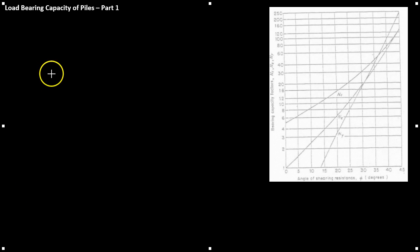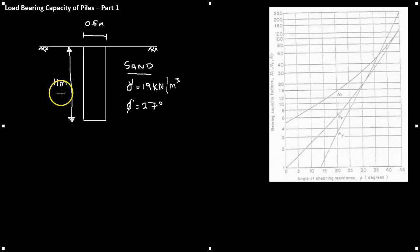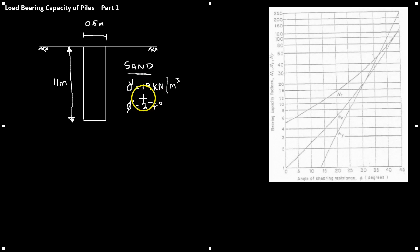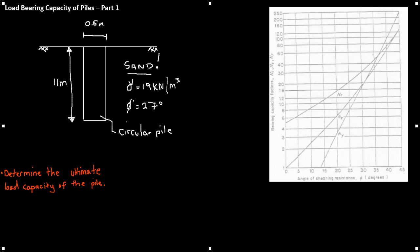Rather than go through a long list of equations, it would be best if we work through an example. We have a pile 11 meters deep, 0.6 meters in diameter — a circular pile. The unit weight of the soil is 19 kilonewtons per meter cubed and the internal friction angle of that soil is 27 degrees. Remember we are looking at a sand. The question is to determine the ultimate load capacity of this pile.